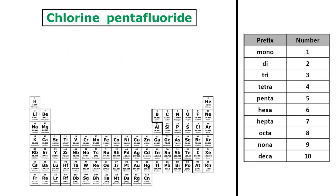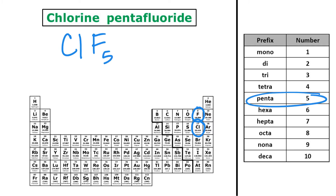Next we have chlorine pentafluoride. I've got chlorine first, so I'll just put my symbol there: Cl. There's no prefix, and remember, that tells me that I only have one chlorine, so I don't need to put a subscript, because no subscript means one, just like no prefix means one. And then I have pentafluoride, so I'll put F, and penta means five. So the formula for chlorine pentafluoride is ClF5.